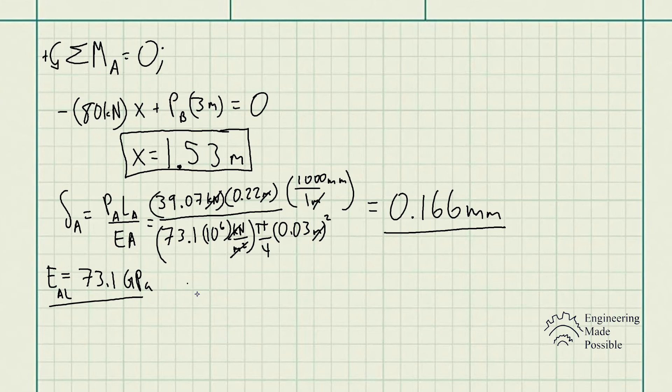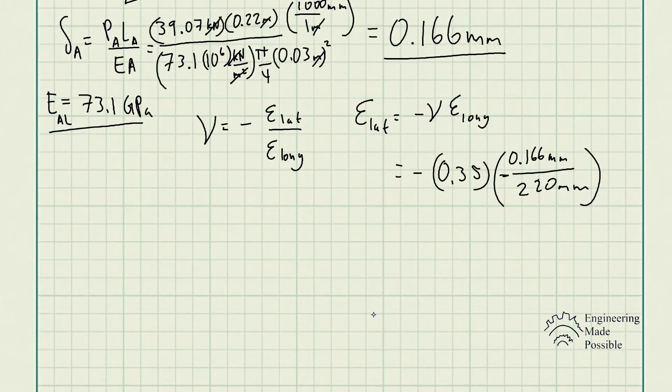So now this is where we utilize Poisson's ratio. Poisson's ratio is equal to negative the strain, the lateral strain divided by the longitudinal strain. Now here, since we already have Poisson's ratio given, we could go ahead and solve for the lateral strain in this case. The lateral strain is equivalent to negative Poisson's ratio times the longitudinal strain. So we know Poisson's ratio is 0.35. Now the change in the length is 0.166 millimeters.